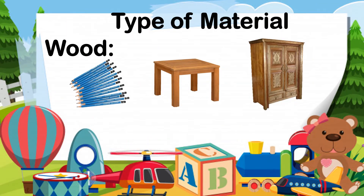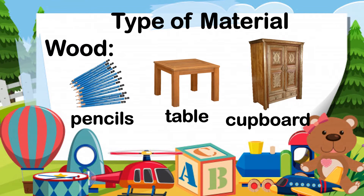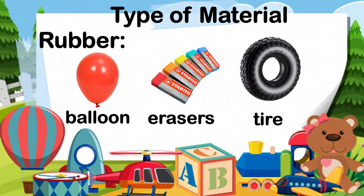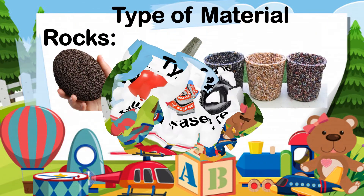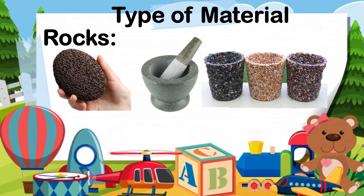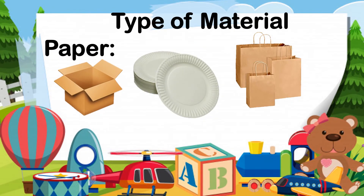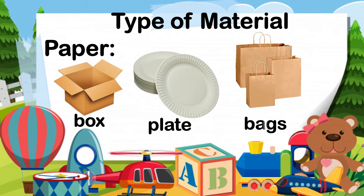We have wood materials: pencils, table, and cupboard. Examples of rubber materials are balloon, erasers, and tire. We also have rocks. Rock materials include pumice, mortar, and pots. Paper materials are paper plates and paper bags.